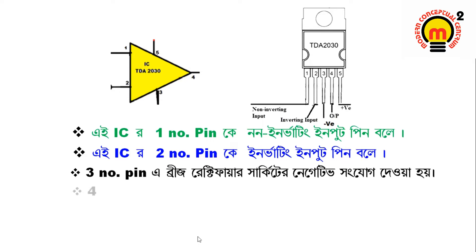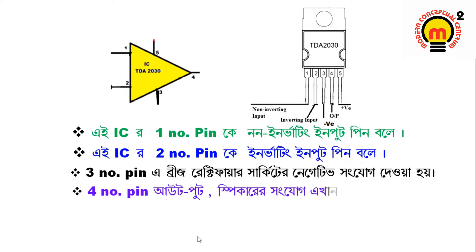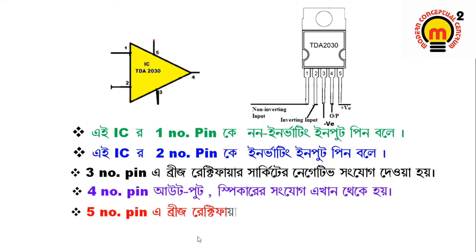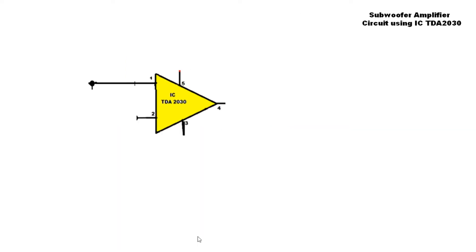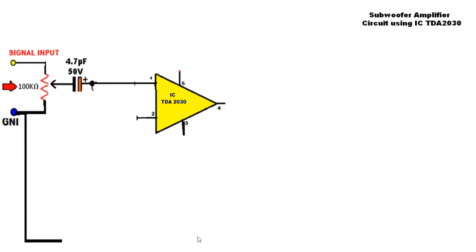The IC has a 4 number pin, which has a connection to the speaker. The speaker has a connection to the 4 number pin. The IC has a 5 number pin with a power supply, and DC has a positive supply. The IC also has a non-inverting input pin, controlled by a variable resistor which acts as a potentiometer, providing a positive signal.